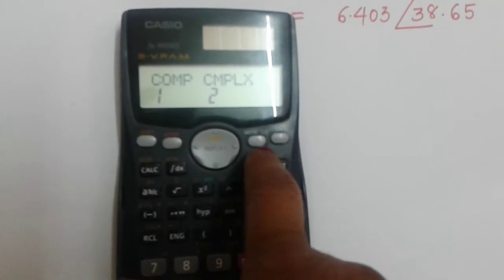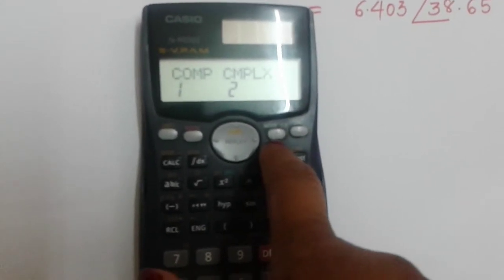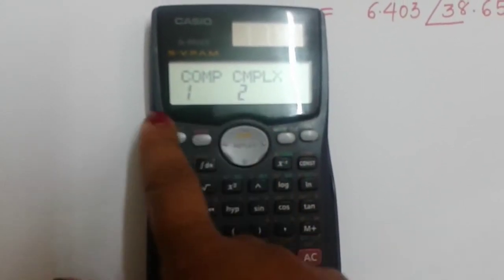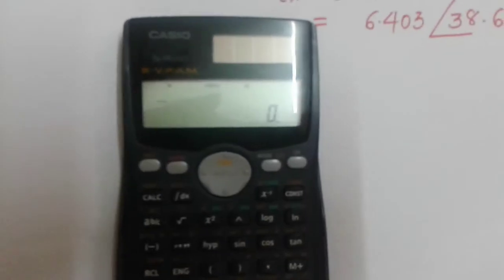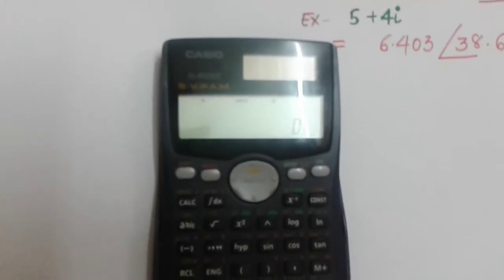If you select mode, you will get 2 and 1. You have to select 2, the complex mode. If you press 2, complex will get selected, and then you have to feed the values.